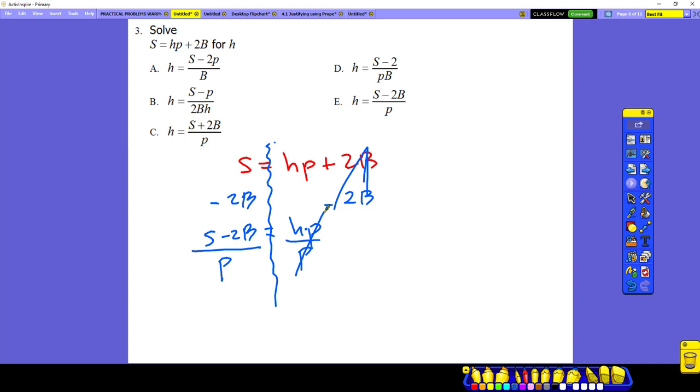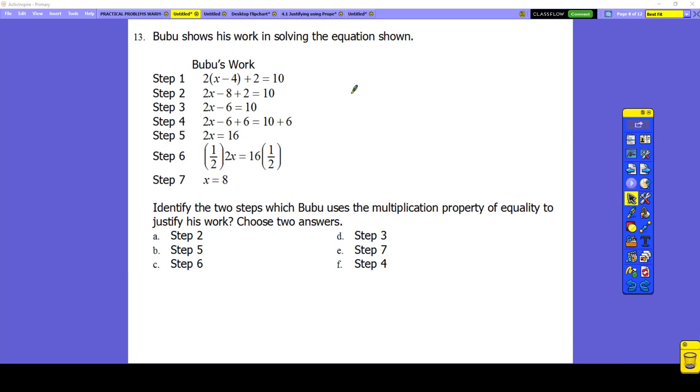Cancel out. So h is equal to s minus 2b divided by p. So the answer should be letter E. Okay. There you go. Letter E.